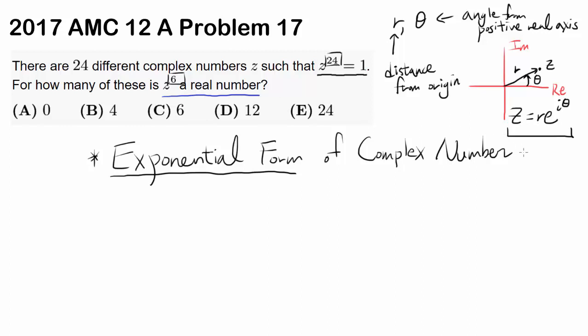I'm not going to prove why you can write it like this in this video — to prove it you have to use some Taylor series and some calculus, maybe in some other video in the future. Anyway, we want to find Z in exponential form, so how can we do that?